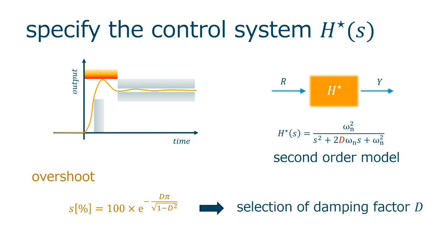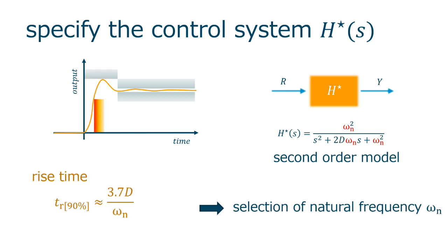We have a formula relating the overshoot and the damping factor d, and we know that for an overshoot of 5%, we have the reference value of 0.7. The rise time relates with both these parameters in an approximate formula, but as d is already established by the overshoot objective, we use the natural frequency to set the response time.